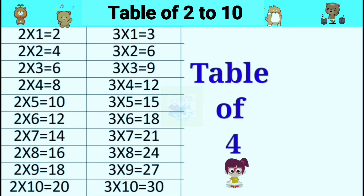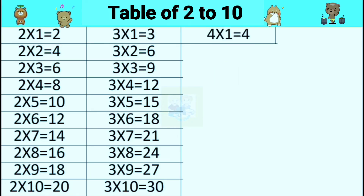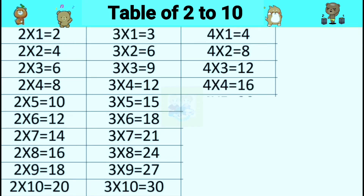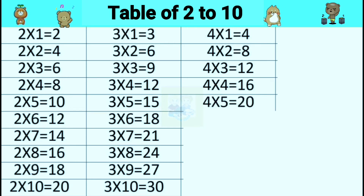Table of four. Four ones are four. Four twos are eight. Four threes are twelve. Four fours are sixteen. Four fives are twenty.